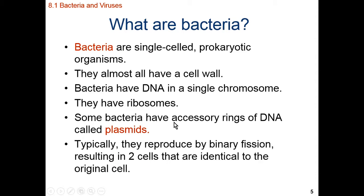All bacterial cells are going to reproduce via a process known as binary fission, which is essentially splitting down the middle and splitting in half — budding. That binary fission process will have two daughter cells that are nearly identical. There's always going to be a few genetic differences, a few mutations that occur. But these two daughter cells, for all intents and purposes, are going to be identical to the original parent cell.